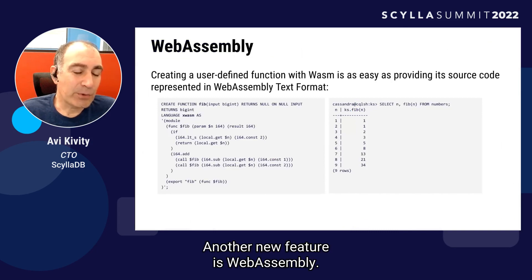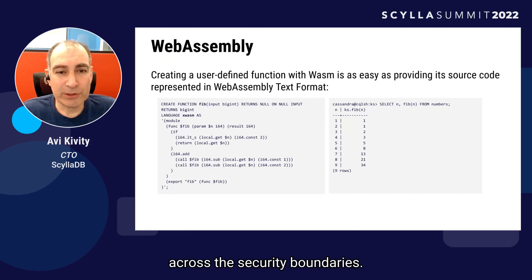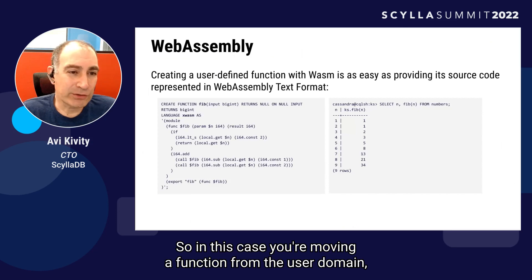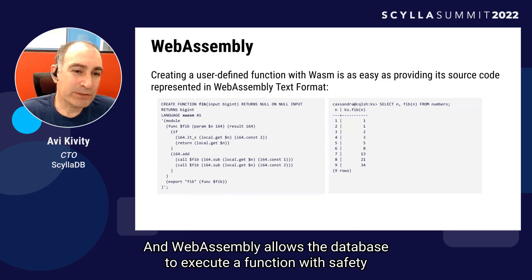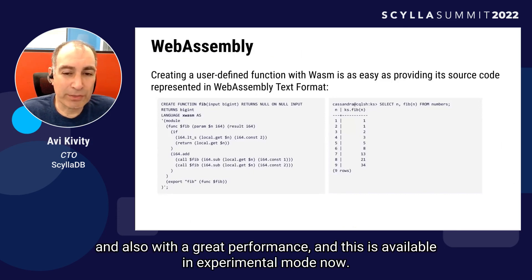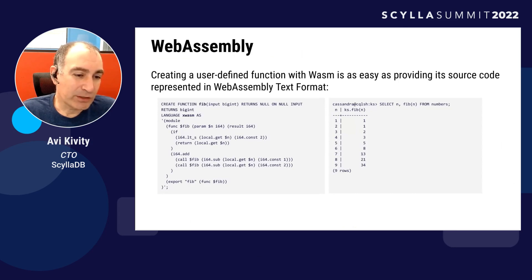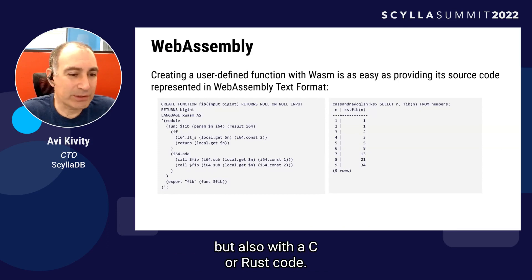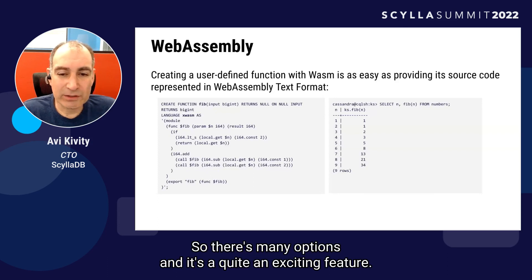Another new feature is WebAssembly. WebAssembly is a new way to perform computations across security boundaries — in this case, you're moving a function from your user domain into the database. WebAssembly allows the database to execute a function with both safety and great performance. This is available in experimental mode now. You can provide a WebAssembly function as raw WebAssembly code, but also with C or Rust code. There are many options and it's quite an exciting feature.